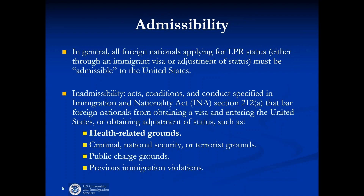Here's where the medical exam and health-related grounds of inadmissibility come in. Foreign nationals coming to the United States must be admissible, meaning they cannot be subject to any grounds of inadmissibility. U.S. immigration laws specify certain acts, conditions, and conduct that bar foreign nationals from being admitted. These are called grounds of inadmissibility, listed in the Immigration and Nationality Act, Section 212. Examples include criminal grounds, national security, prior immigration law violations, and health-related grounds of inadmissibility.